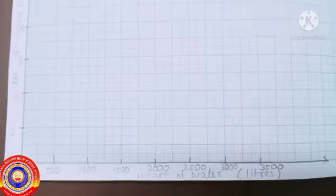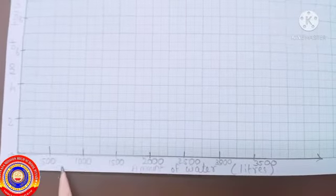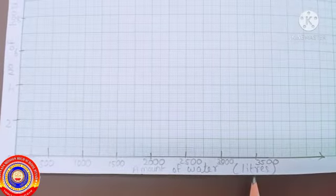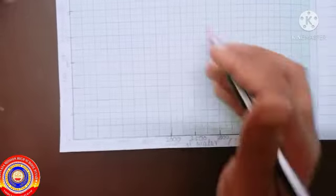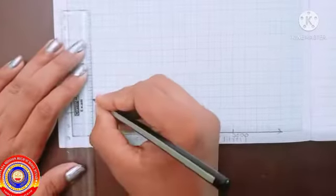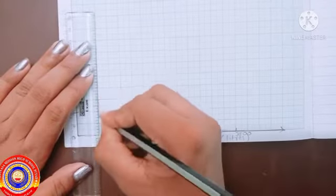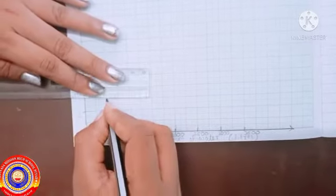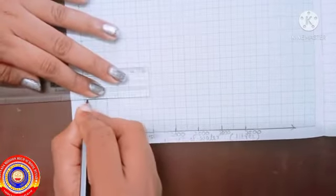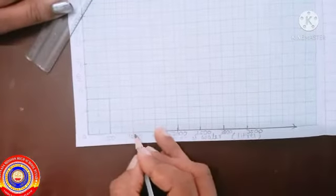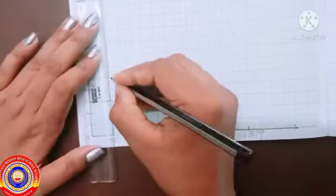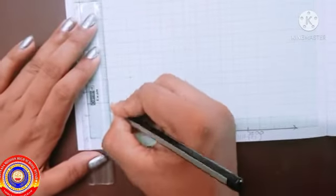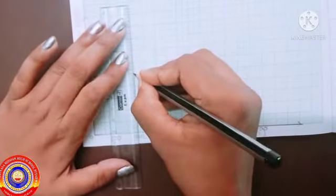Here, classes are marked on the horizontal line and frequency on the vertical line. Let's draw the histogram. From 0 to 500, three households are using water, so mark 3 and draw the lines. Then from 500 to 1000, the number of households is 5, so mark 5 and draw the lines.